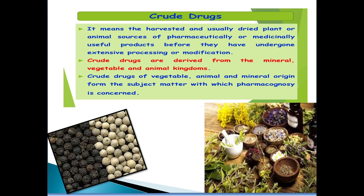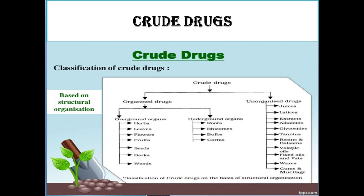Crude drugs are of vegetable, animal and mineral origin, which form the subject matter with which pharmacognosy is concerned. The crude drugs are classified into two types — based on structural organization: one is organized drugs, and another one is unorganized drugs.